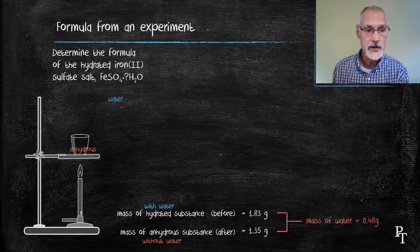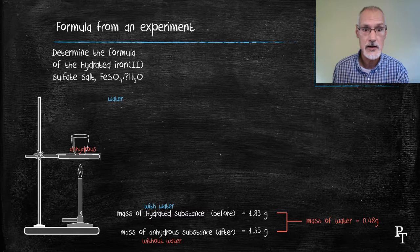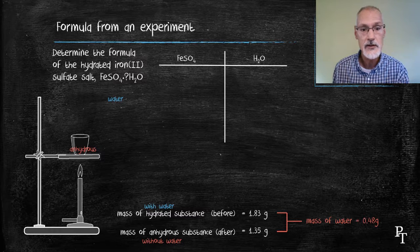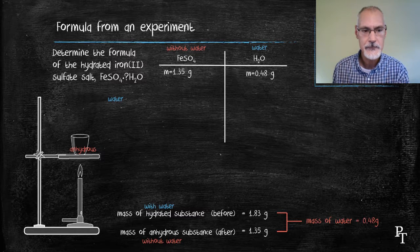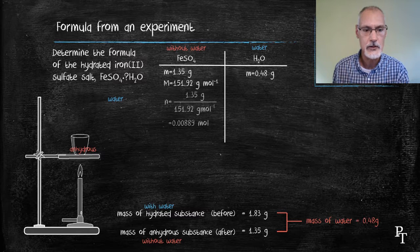To determine the formula that this substance has, I consider the two parts of the substance, the dry part without water, and the water portion. Their masses are recorded here. I look up the molar mass of the dry part of the chemical, and from that calculate the number of moles of the dry part of the chemical.